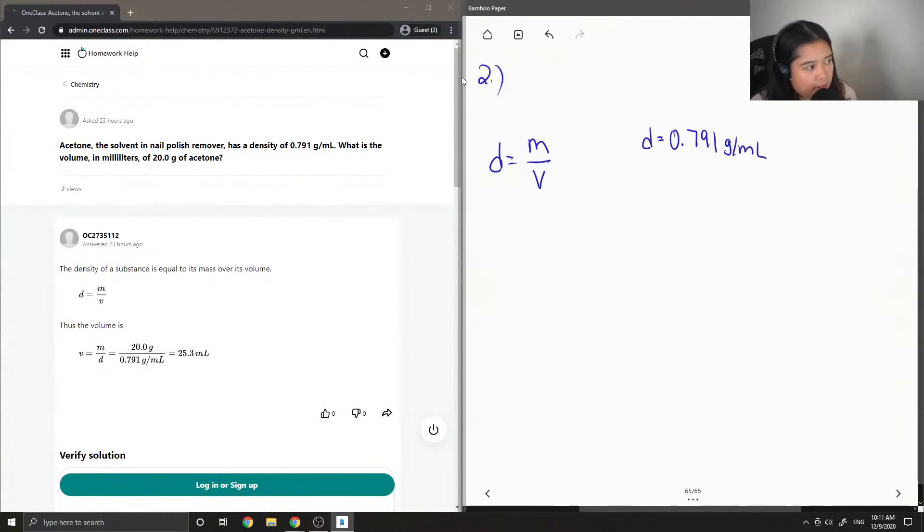And they gave us the mass, 20.0 grams of acetone, and we're looking for the volume in milliliters.